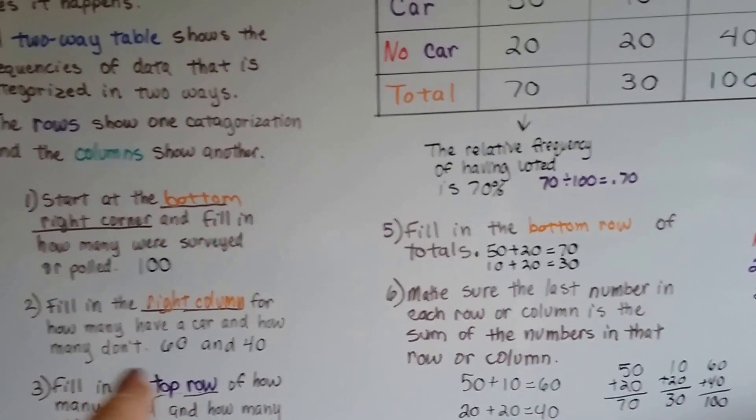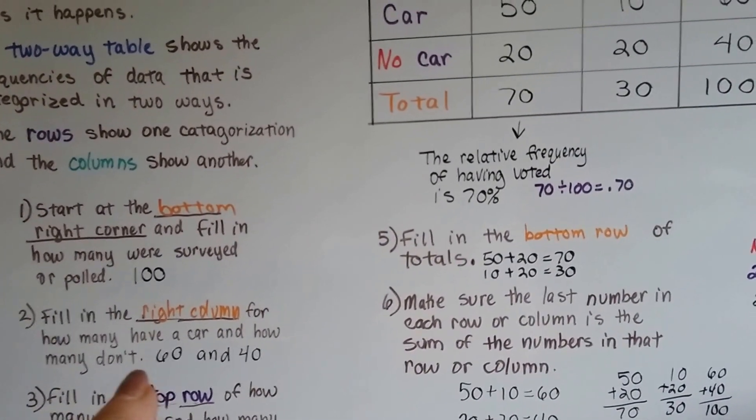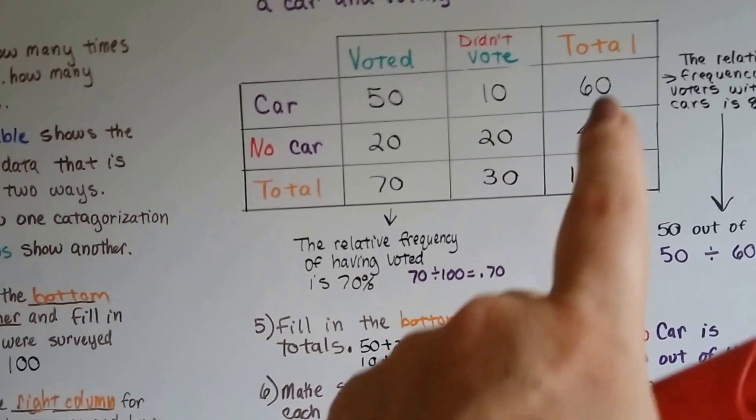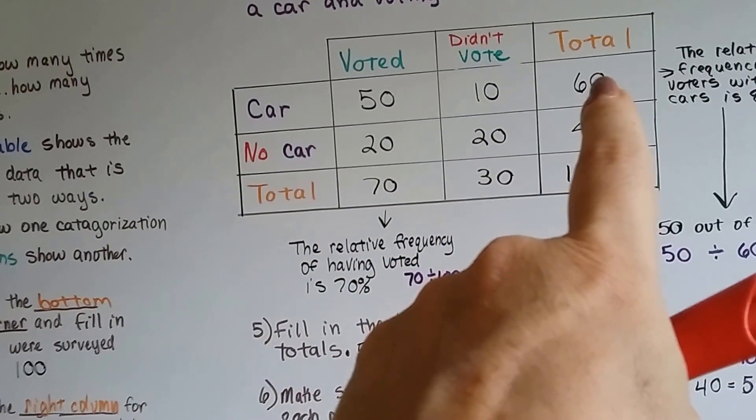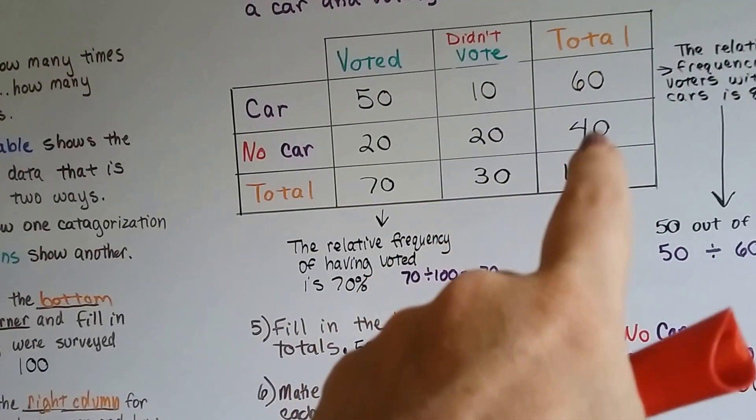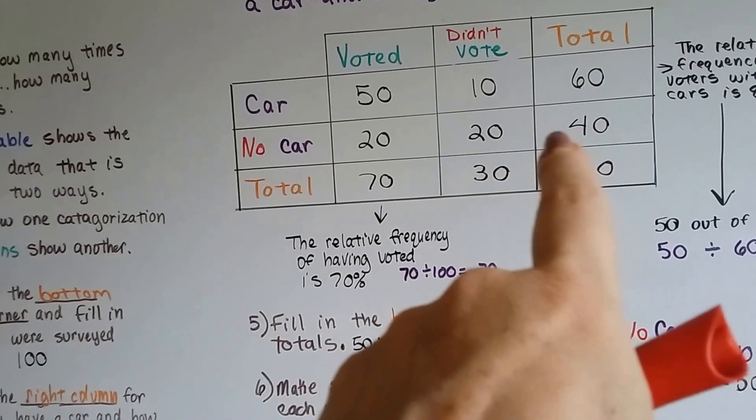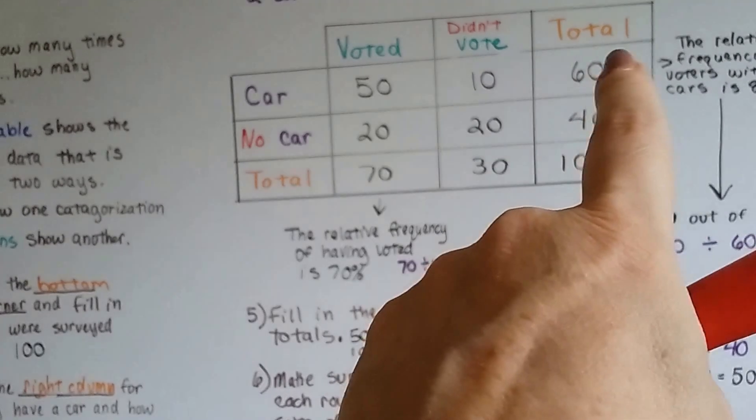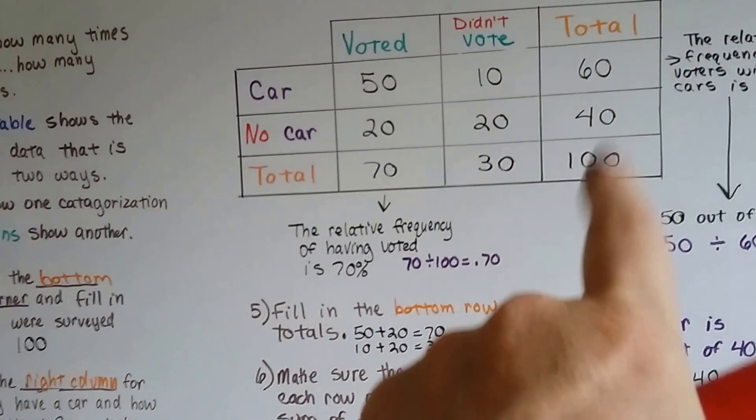We fill in the right column for how many have a car and how many don't. How many had a car, the answer was 60, and 100 take away 60 is 40. So we know that the no car had to be 40 if the yes cars were 60, because we took it from the 100.